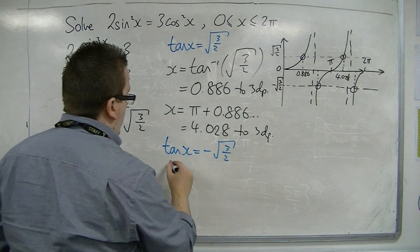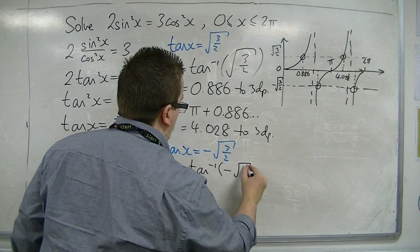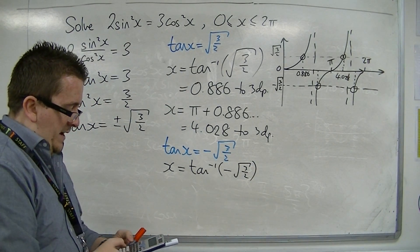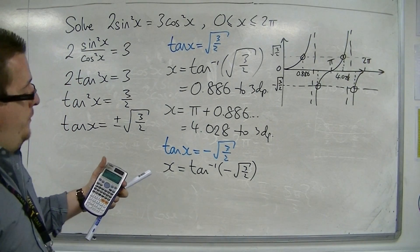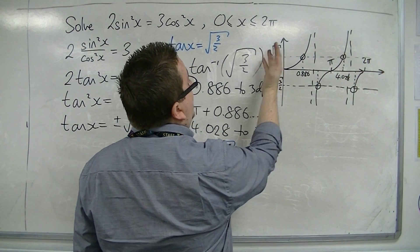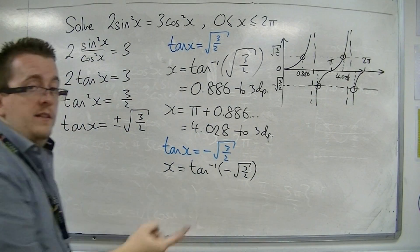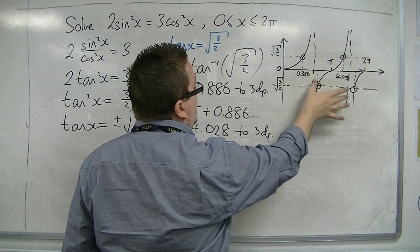The first one's coming from inverse tan of minus root 3 over 2. That's minus 0.886, giving me the solution to the left of the y-axis. I'm going to add pi to that to get this solution here.